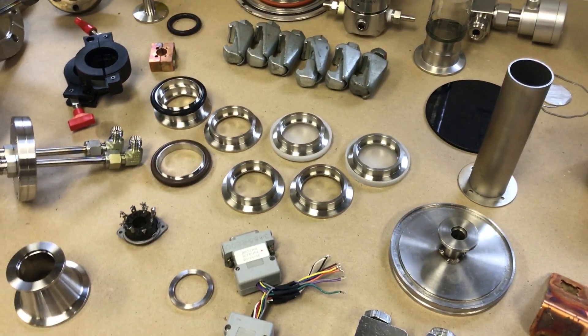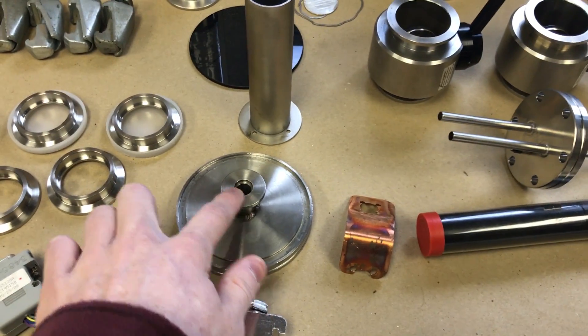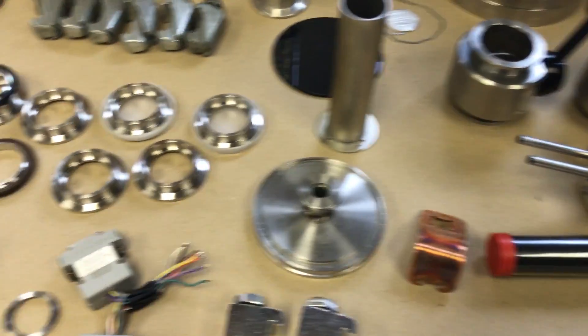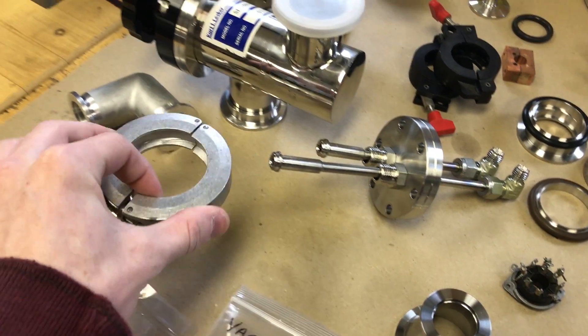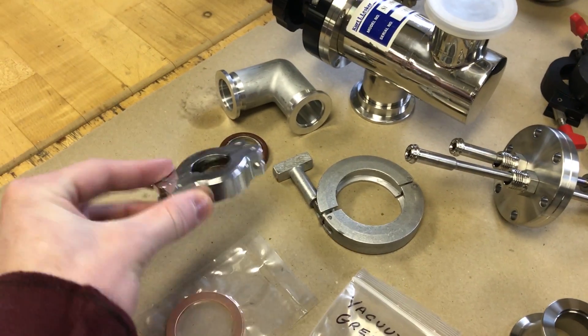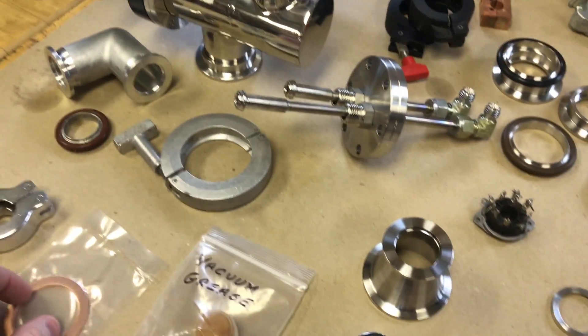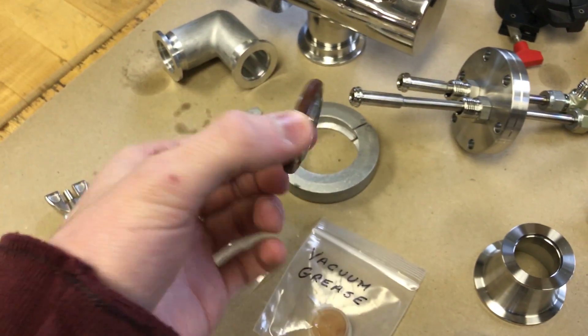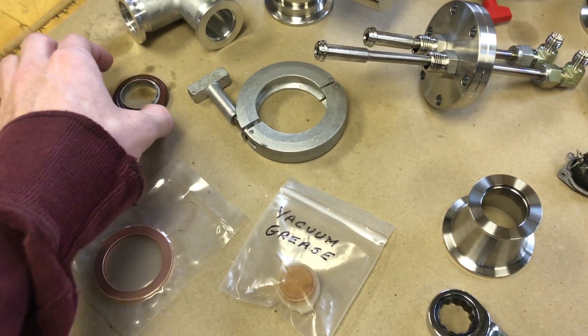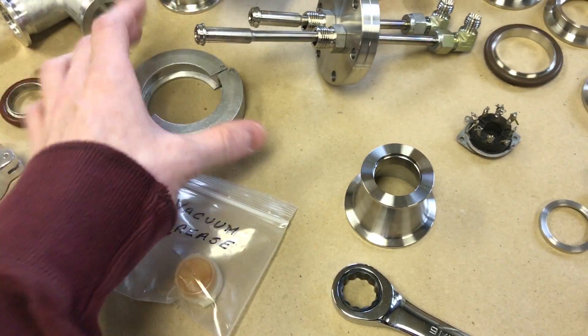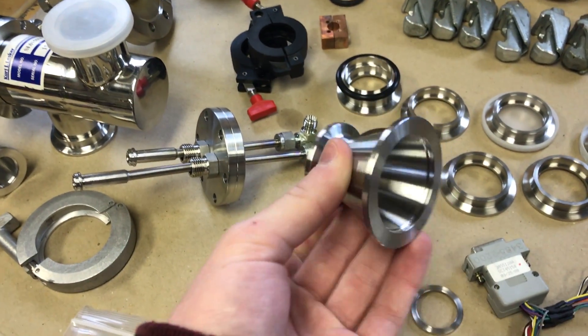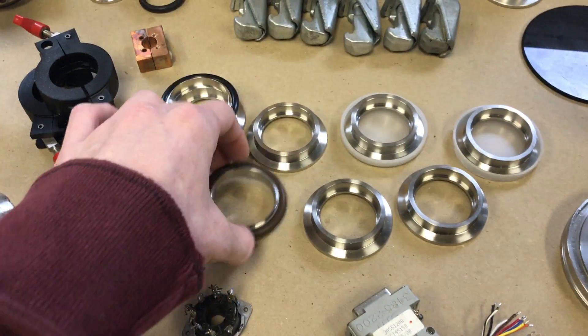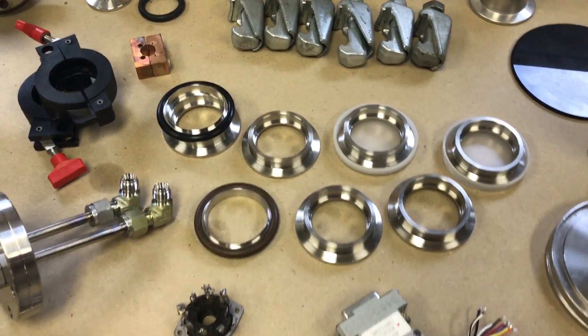So this is a KF-40 right here. There's a few common sizes you'll see are KF-10, KF-16, KF-25, and KF-40. So this uses a clamp like this. This is a KF-40 clamp. This is a KF-16 clamp. And then the centering rings look like this. And the clamp goes around the connector.